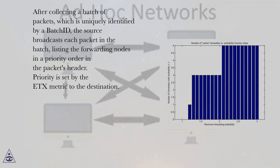After collecting a batch of packets, which is uniquely identified by a batch ID, the source broadcasts each packet in the batch, listing the forwarding nodes in a priority order in the packet's header. Priority is set by the ETX metric to the destination.